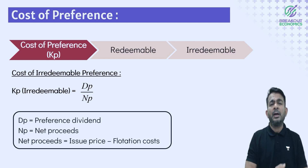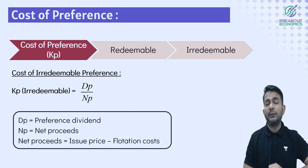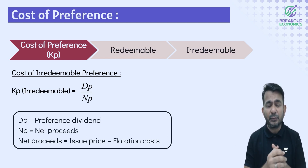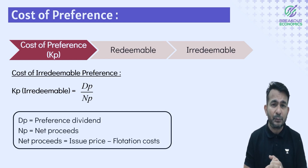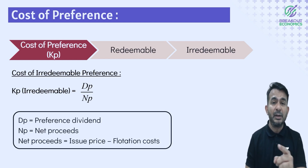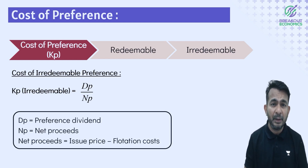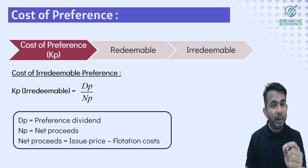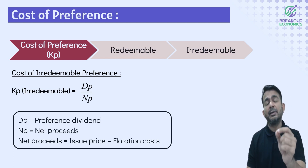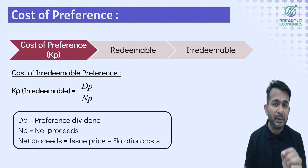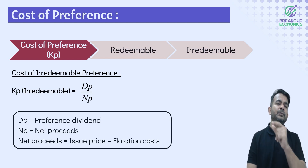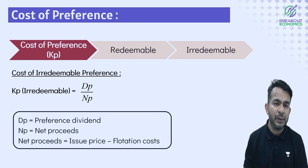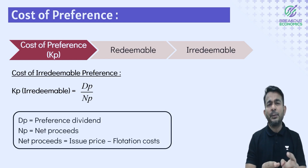Let me recap cost of debt. KD (irredeemable) = I(1-T) / NP. KD (redeemable) = [I(1-T) + (RV - NP)/N] / [(RV + NP)/2]. Now next is cost of preference share.